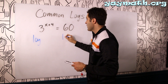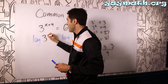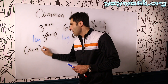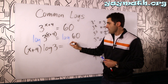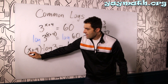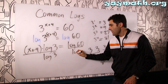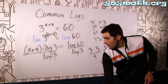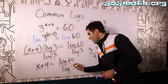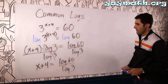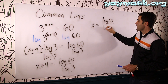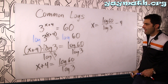Taking log of both sides: log of 3 to the x plus 4 equals log of 60. We bring x plus 4 to the front, giving us x plus 4 times log 3 equals log 60. To isolate x, we divide both sides by log 3. That gives us x plus 4 equals log 60 over log 3. Then subtract 4 from both sides: x equals log 60 over log 3 minus 4.